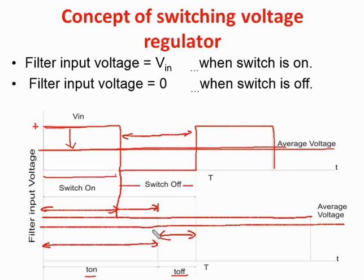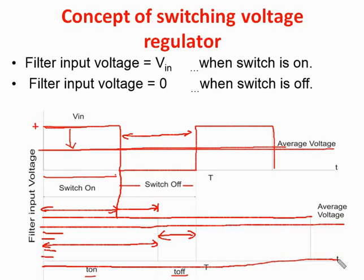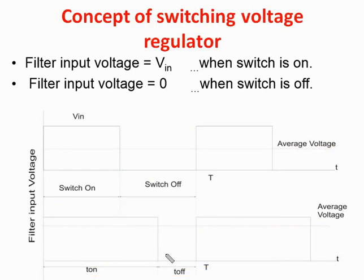By decreasing the on-time, we get a decreased average output voltage. If the switch is turned off completely, we get zero output voltage. So by changing the on-time of the MOSFET or switching element, we get a variable DC output voltage. At the output side we get the average voltage, but there is no voltage drop across the switching elements. So the efficiency of the switching voltage regulator is higher than the linear voltage regulator.